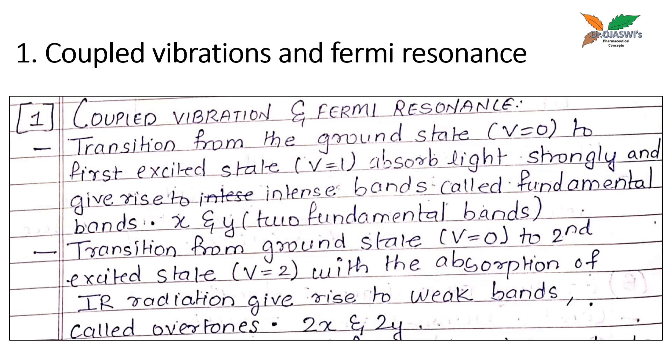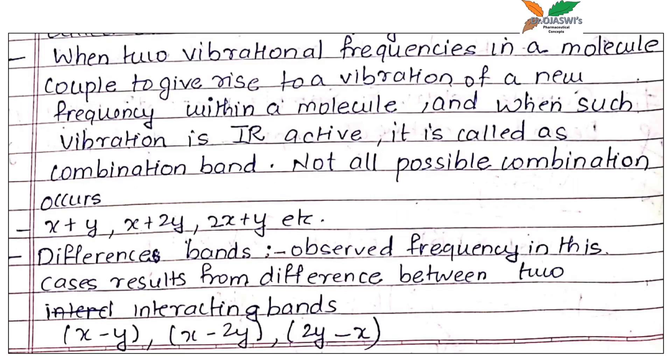If the transition from ground state to the second excited state with the absorption of IR radiation gives rise to weak bands called the overtones, i.e. 2X and 2Y. When two vibrational frequencies in a molecule couple to give rise to a vibration of a new frequency within a molecule and when such vibration is IR active, it is called a combination band. Not all possible combinations occur.